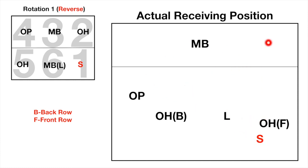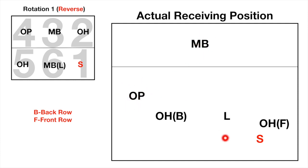Usually the outside hitter from the front row falls back to the back row to receive, while the middle blocker remains in the front row. The opposite spiker does not receive. The back row setter should stand behind the outside hitter from the front row.